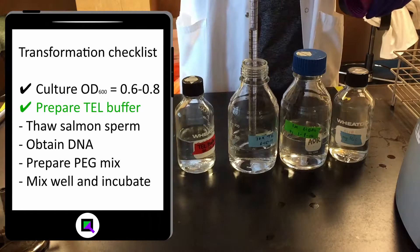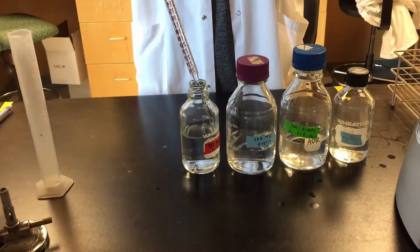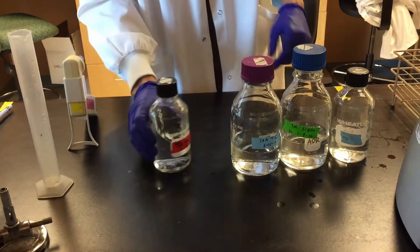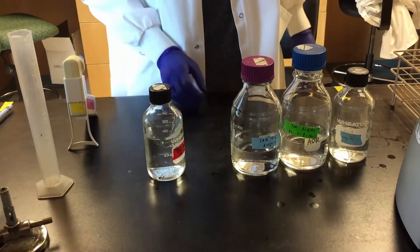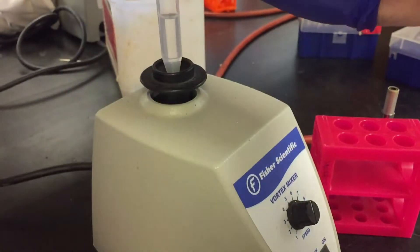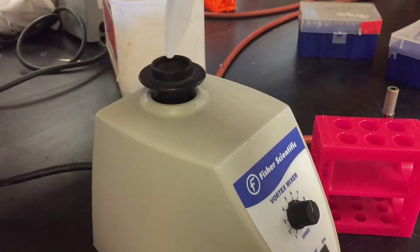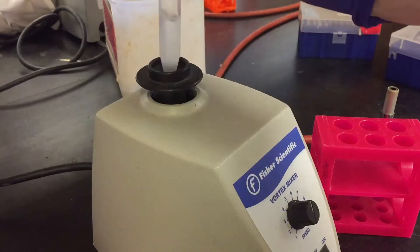Tel Buffer is just Tris, EDTA, and Lithium Acetate diluted in water. Add Tel Buffer to the tube and vortex or invert to wash.